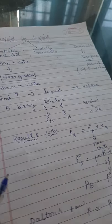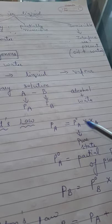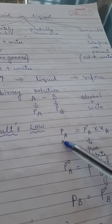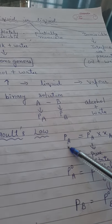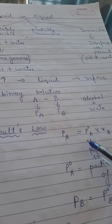Raoult gave a law. What was that law? PA is equal to P0A into XA. PA is the pressure exerted by component A. Now what is the difference between PA and P0A?